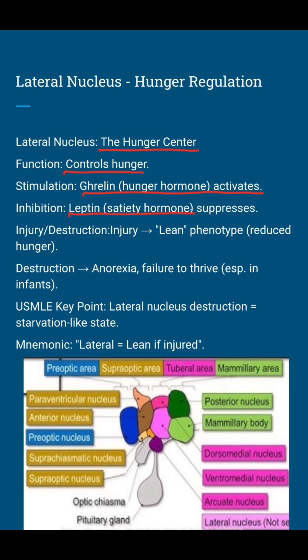On the flip side, the lateral nucleus is inhibited by leptin, the satiety hormone that says 'I'm full, stop eating.' If the lateral nucleus is damaged, you will see a lean phenotype because hunger is suppressed. If it's completely destroyed — say due to a lesion or developmental issue — you get anorexia and failure to thrive, especially in infants like in our opening case. The key mnemonic: lateral equals lean.